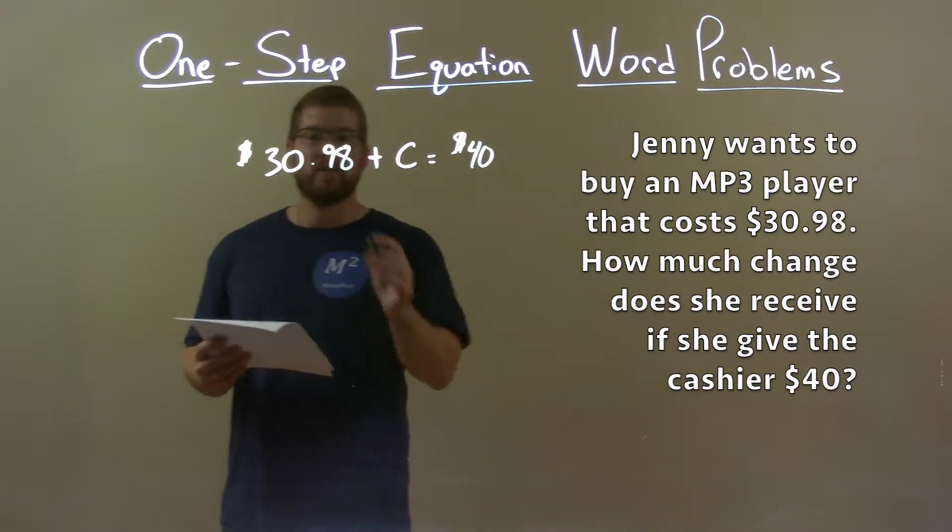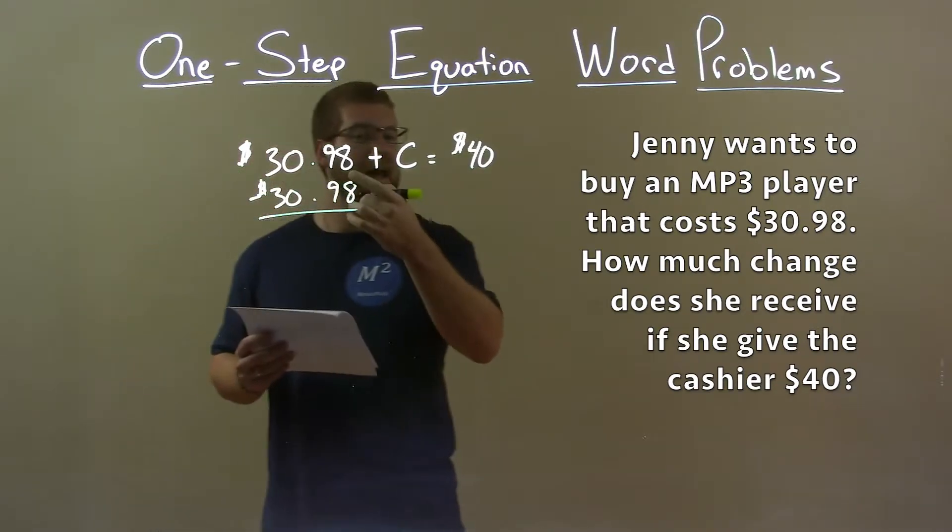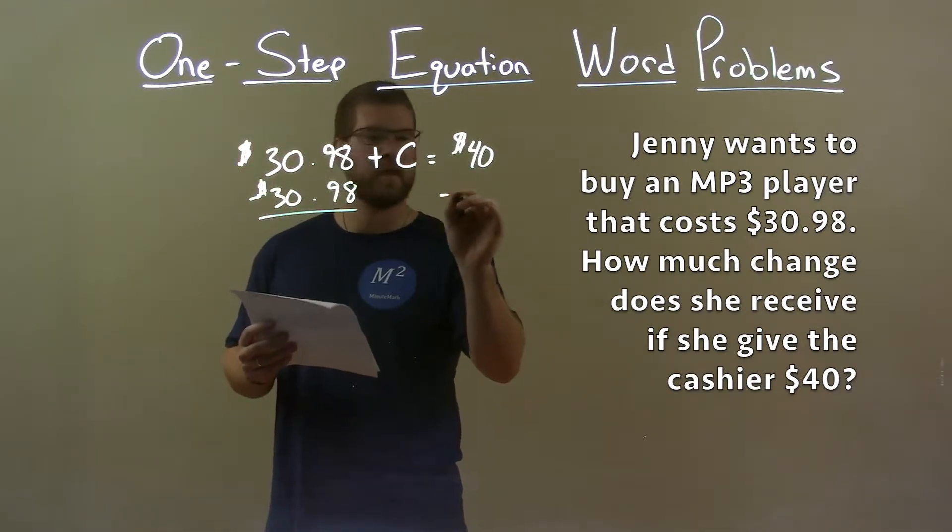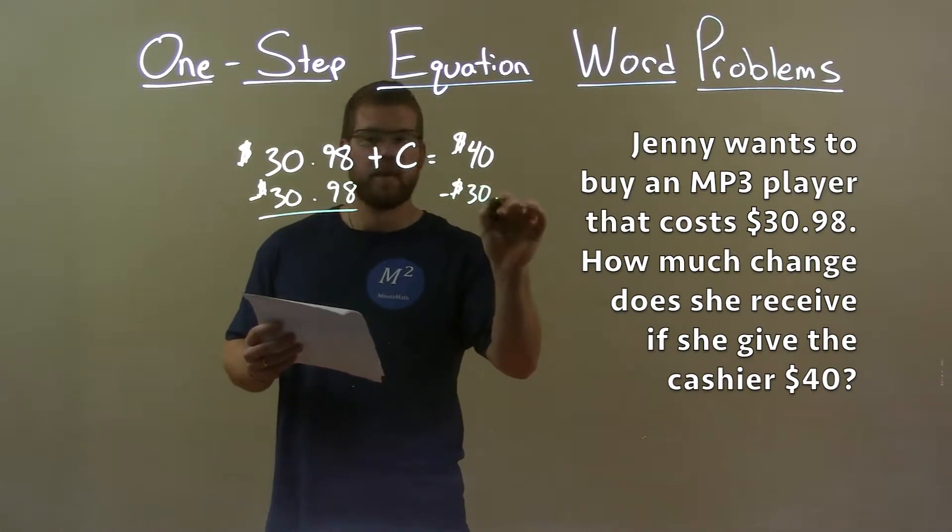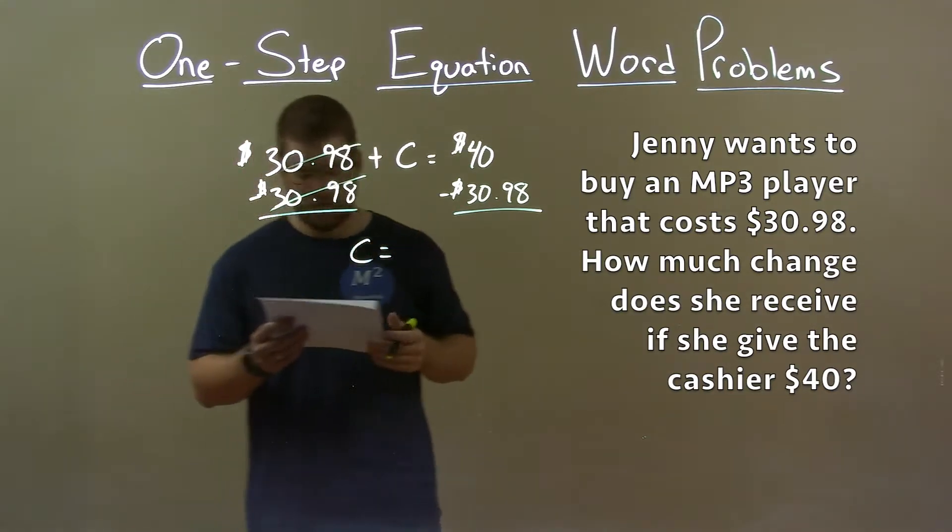To get C by itself, I'm going to subtract $30.98 from both sides. We're doing the opposite of addition: subtraction. So $40 minus $30.98 should equal the amount of change that Jenny will receive.